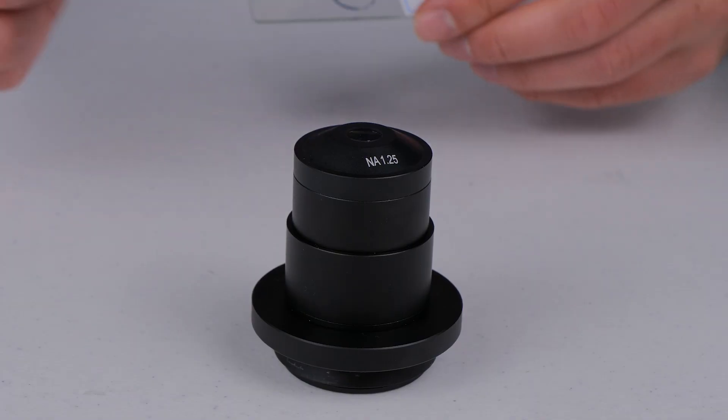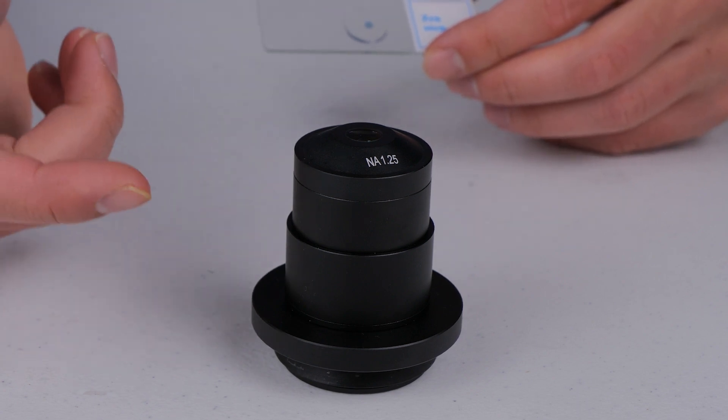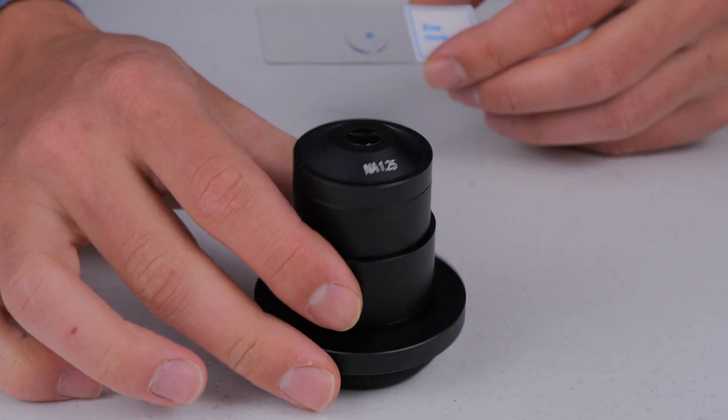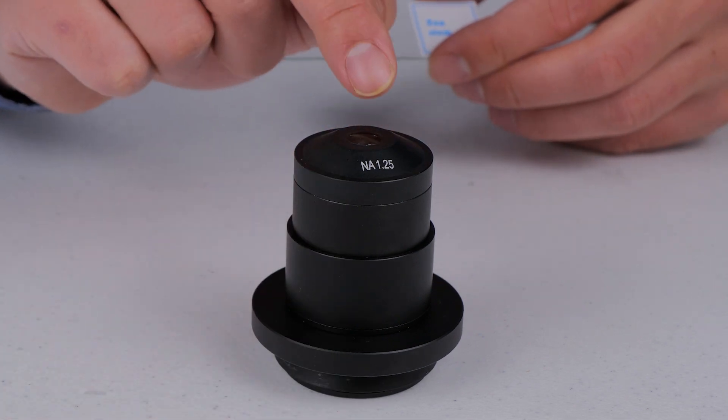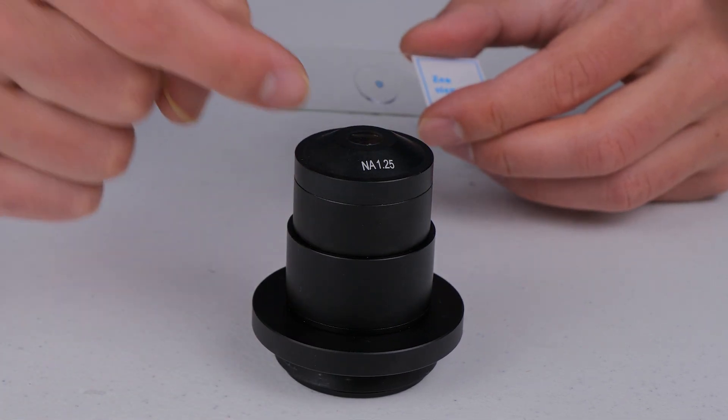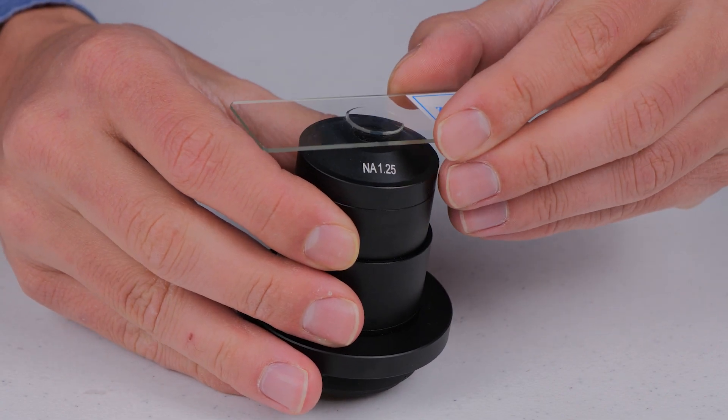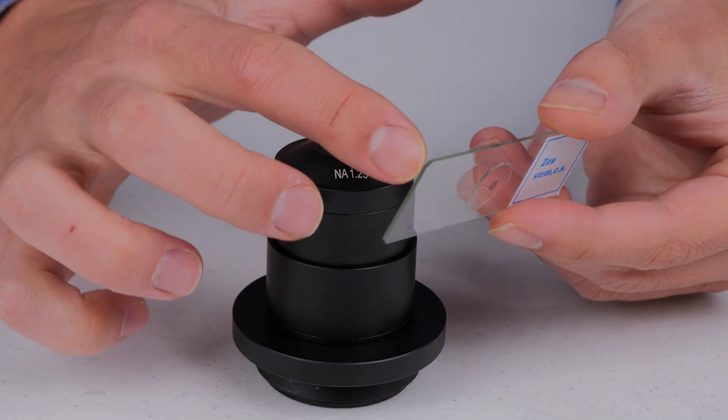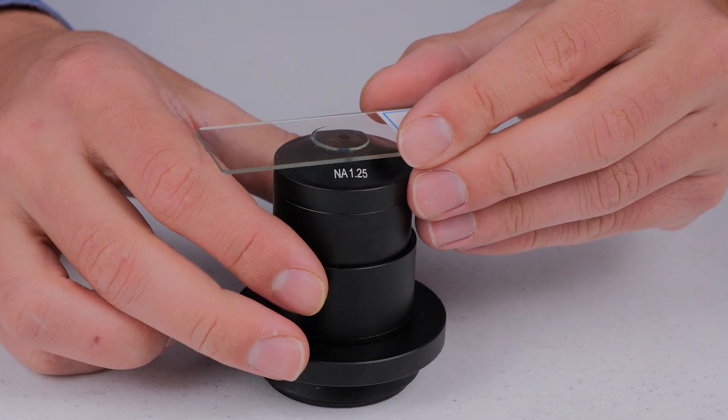If you own a really fancy condenser, it's also going to call out needing oil. This is in fact not a super fancy condenser. It normally will say oil on it if it needs oil. But same deal, you'd put a drop of oil right here, and then that oil would bridge the gap between the underside of the microscope slide and the top of the condenser.